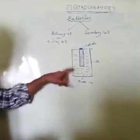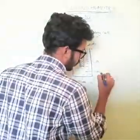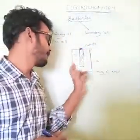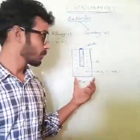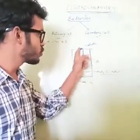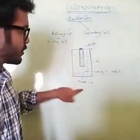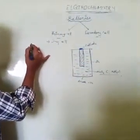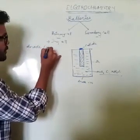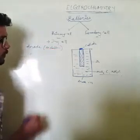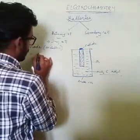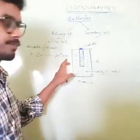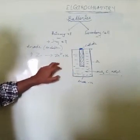Inside the dry cell, a paste is kept — this is the insulator of zinc. Inside it, you have MnO₂, carbon, and NH₄Cl; the combined paste is applied in this area as the electrolyte. There are two electrodes: cathode and anode (zinc). What happens at the anode is oxidation: Zn → Zn²⁺ + 2e⁻.